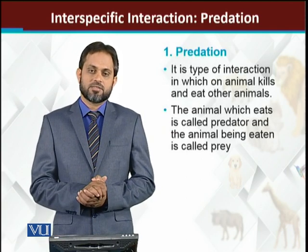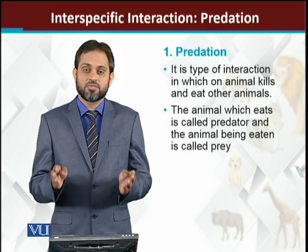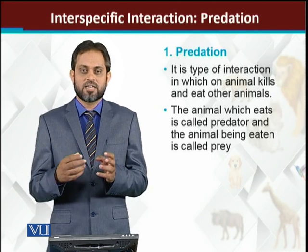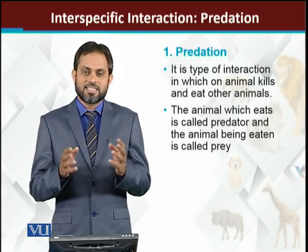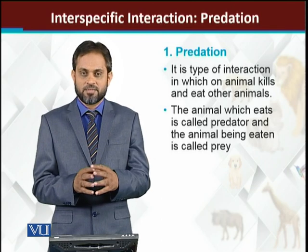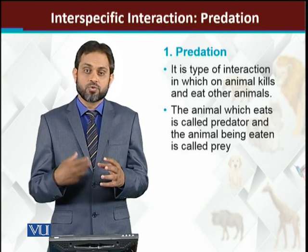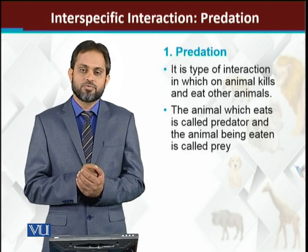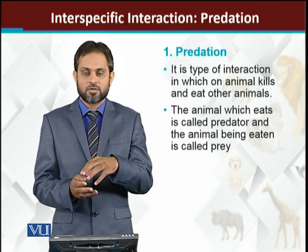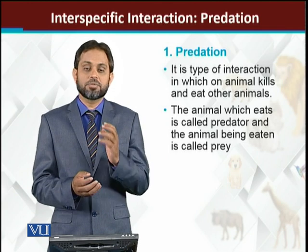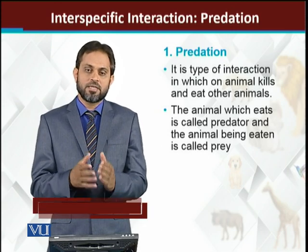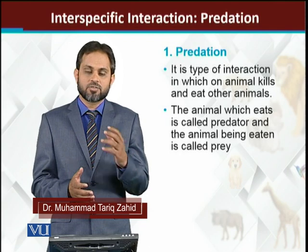So first, predation. Predation is the phenomena or the interaction between two animals in which one animal kills another animal and eats its flesh. This is an interaction between the first animal and the second animal, where the first kills the second and uses it as food. The animal which is killing is called the predator, and the animal being killed is called the prey.